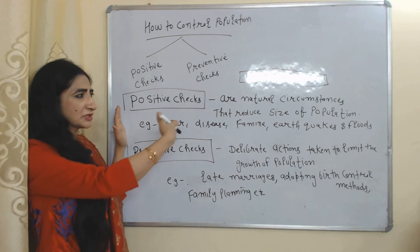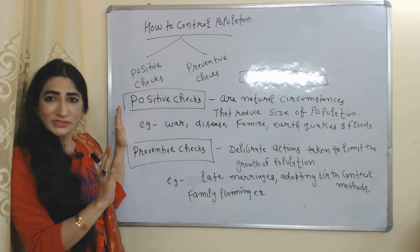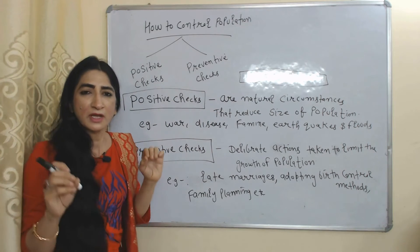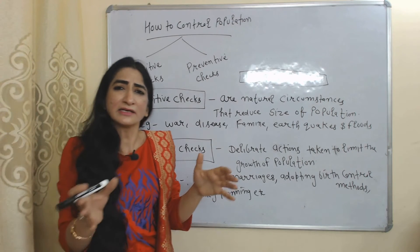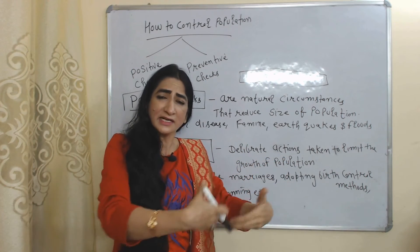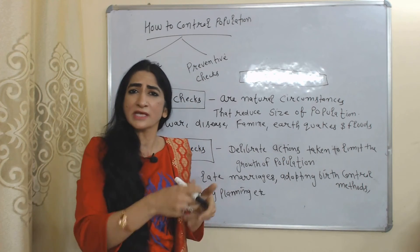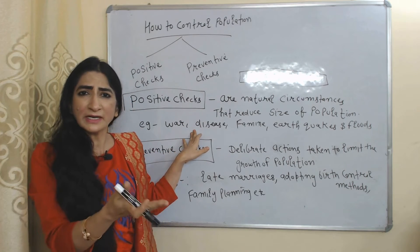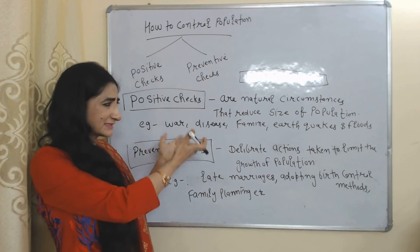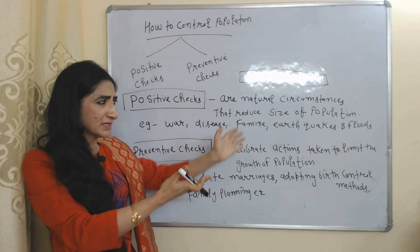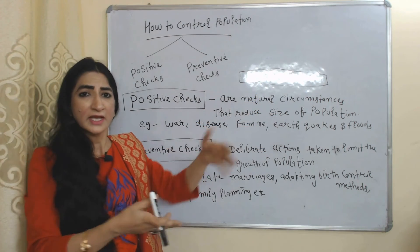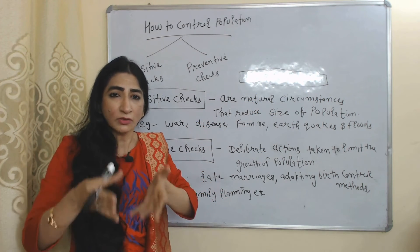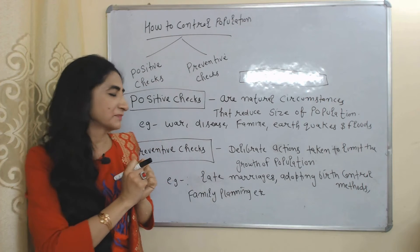Positive checks are natural circumstances that reduce the size of population. For example, so many people are dying because of war, disease, famine, earthquake, or flood. If people are dying, then obviously the growth rate of population will decline.